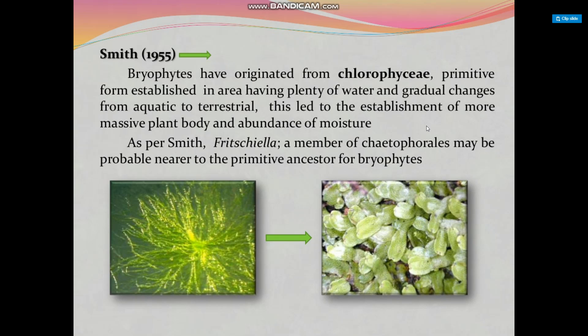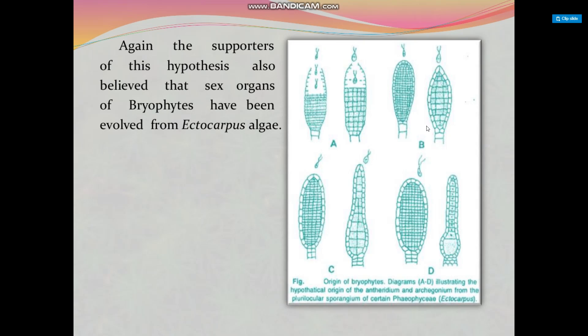Smith (1955) proposed that bryophytes originated from a primitive form of Chlorophyceae, established in areas having plenty of water, with gradual changes from aquatic to terrestrial habitat leading to more massive plant bodies. A member of Cladophorales may be the probable nearest primitive ancestor for bryophytes. Supporters also believe that sex organs of bryophytes evolved from carposporic algae, illustrating the hypothetical origin of antheridia and archegonia from plurilocular algae of certain Phaeophytes like Ectocarpus.